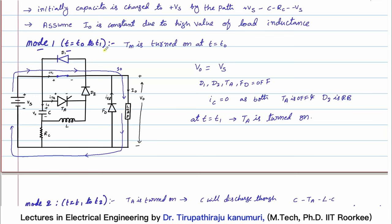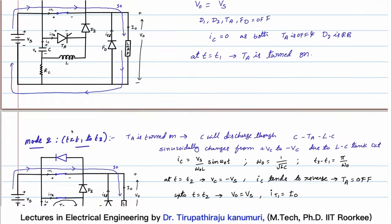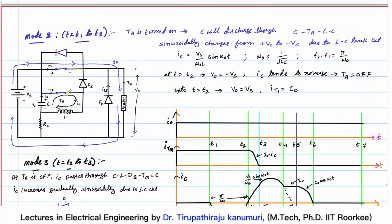At time T equals T1, I trigger the auxiliary thyristor TA. When the auxiliary thyristor is turned on it acts as a closed path, so the capacitor gets a path to discharge through TA and inductor L — forming a tank circuit loop. One current IC circulates in this inner loop and one current I0 passes in the outer loop through the load.